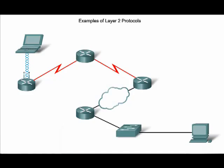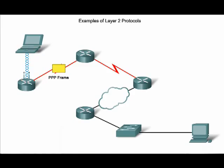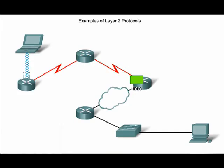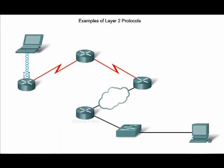As an IP packet travels from source to destination, it will cross devices using different media types. The data link layer is not only responsible for the initial encapsulation of the packet, but also for decapsulating, processing, and encapsulating it into a new data link frame as it traverses the media from one device to another. In this graphic, you can see that the Layer 2 media changes from device to device, and so does the frame type used to travel over the links.